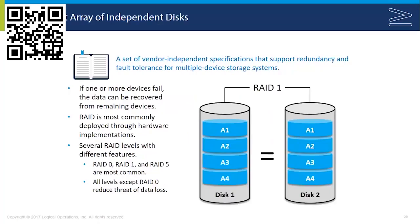Fault tolerance and redundancy are built in across various areas, but one of the most common areas to consider is the disk. We have a specification identified by the acronym RAID — Redundant Array of Independent Disks — which supports redundancy and fault tolerance for multiple-device storage systems. The idea is that if volumes are pointed to a single physical drive and that drive fails, the volume becomes inaccessible. However, if multiple physical drives make up a logical volume, then one or more devices could fail and the data is still accessible.